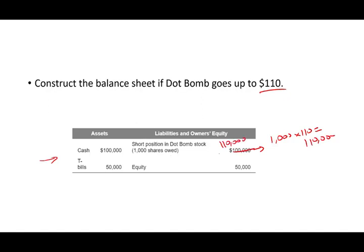Your cash stays at $100,000 and treasury bills remain $50,000, but your equity is eaten by $10,000 — it drops from $50,000 to $40,000. Every time the stock goes up, your equity goes down by the same amount, because it's moving against your short position. Conversely, if the stock drops to $90, the liability falls to $90,000 and your equity rises to $60,000.